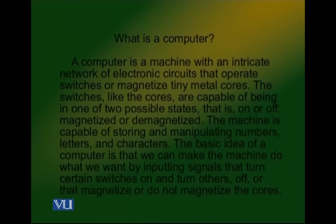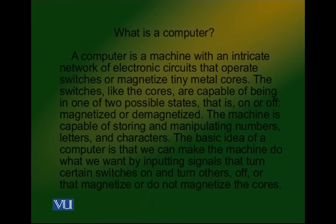Read the first paragraph: 'A computer is a machine with an intricate network of electronic circuits that operate switches or magnetized tiny metal cores. These switches, like the cores, are capable of being in one of two possible states — on or off, magnetized or demagnetized. The machine is capable of storing and manipulating numbers, letters and characters. The basic idea of a computer is that we can make the machine do what we want by inputting signals that turn certain switches on and others off, or that magnetize or do not magnetize the cores.'